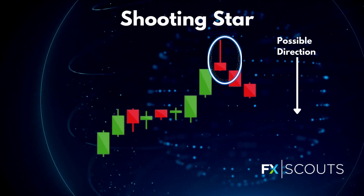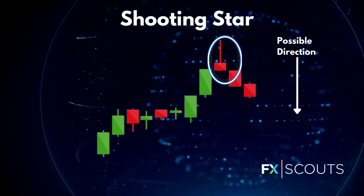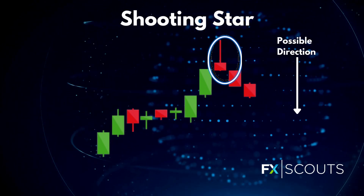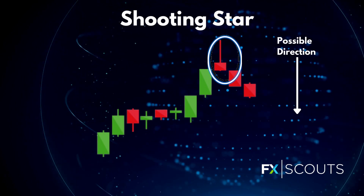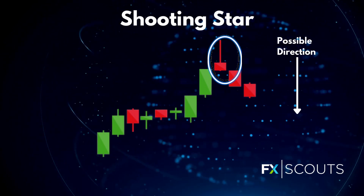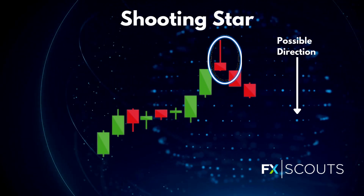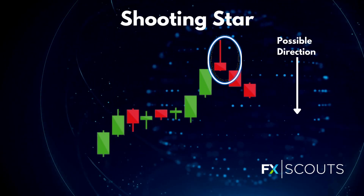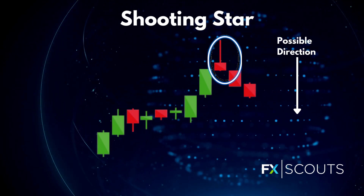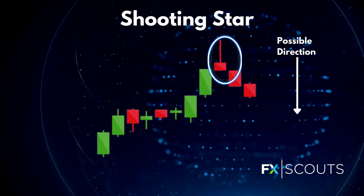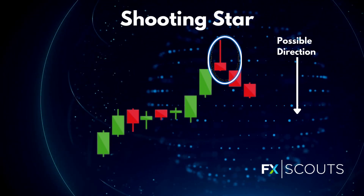Next you have the shooting star — it's the same shape as the inverted hammer but it's formed in an uptrend. It has a small lower body and a long upper wick, and usually the market will gap slightly higher on opening and rally to an intraday high before closing at a price just above the open, like a falling star to the ground.